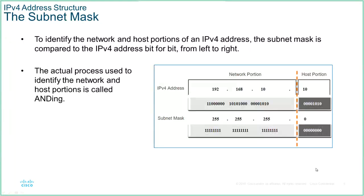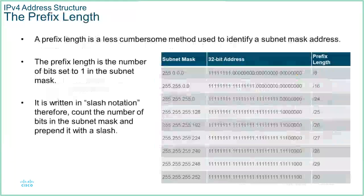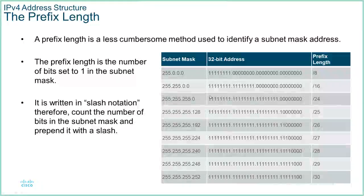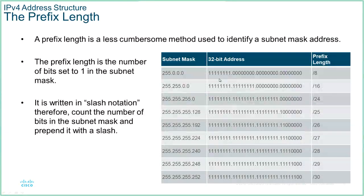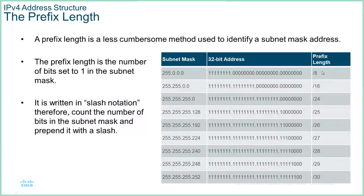That leaves the network address behind, and that address is what the router uses to make forwarding decisions. The subnet mask in longhand dotted decimal notation is on the left, what it represents in binary is in the middle, and we have the CIDR notation or prefix length on the right.